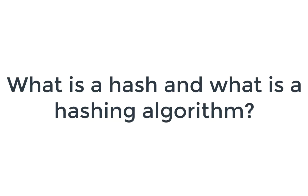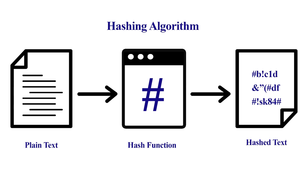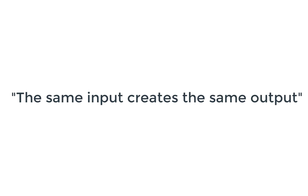First, to understand what is a hash and what is a hashing algorithm. A hashing algorithm is a hash function, which is a mathematical function that converts an input value into a numerical value — a hash or hash value. A hash function converts an input of letters and numbers into an encrypted output of a fixed length. Different blockchains can use different hash functions. The main feature of a hashing algorithm is that it is a one-way function: you can get the output from the input, but you can't get the input from the output. The other key feature is that the same input creates the same output.